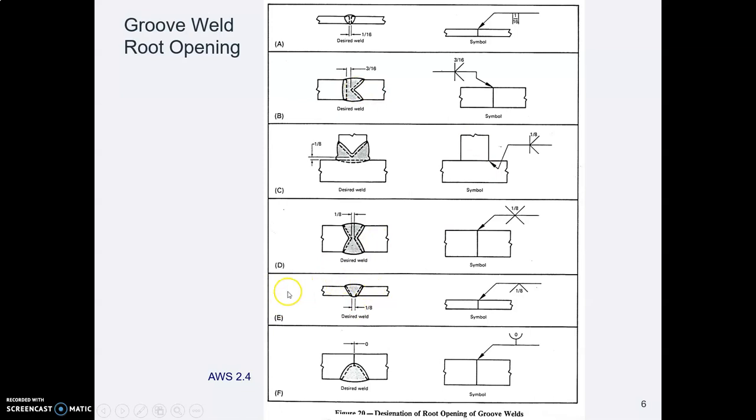Here in example E where we have a V weld and we want those two plates to be an eighth of an inch apart. That eighth of an inch is the root opening and so we put an eighth in the middle of the weld symbol there.